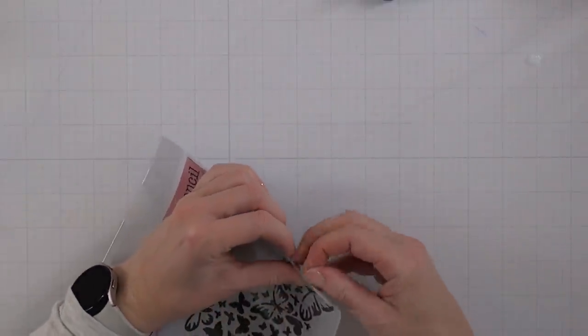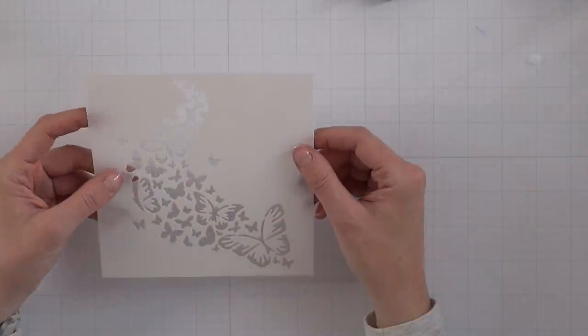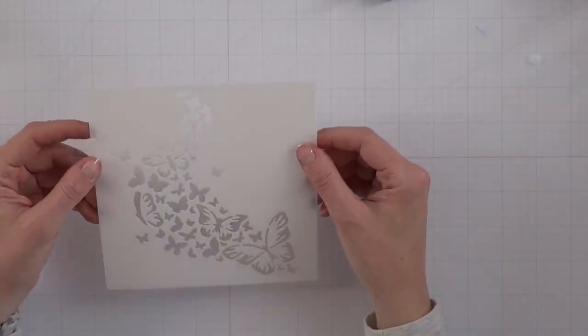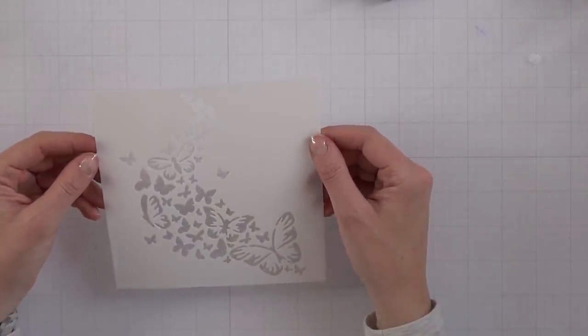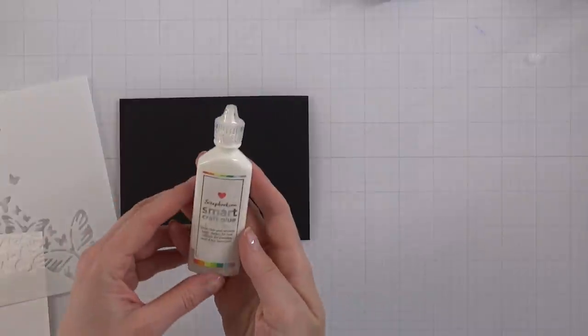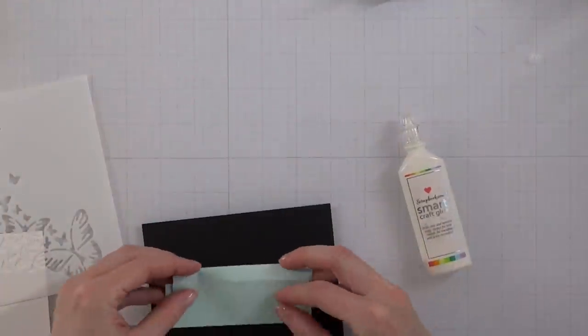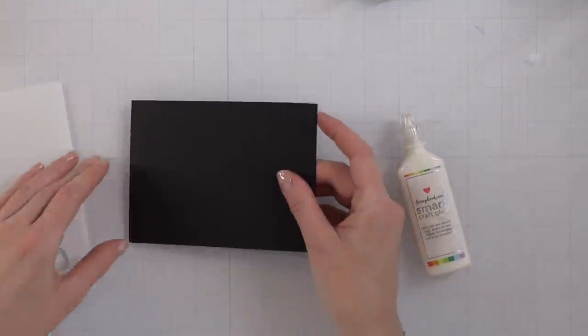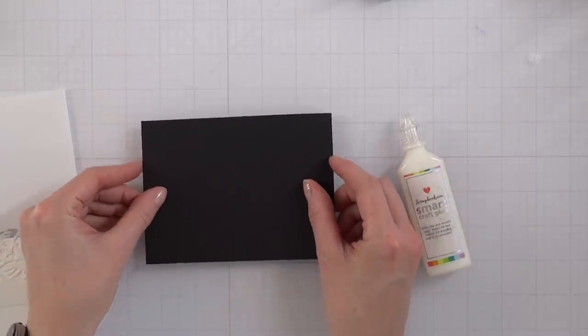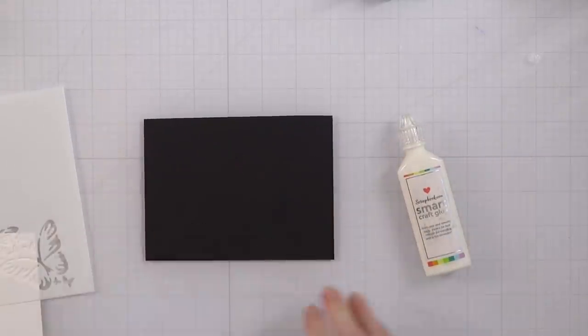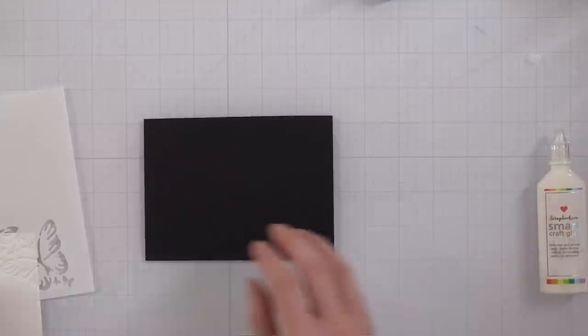This is called butterfly trails. This stencil actually comes in a 6x6 and a 12x12, so this would be really cool for scrapbooking layouts or other projects, maybe furniture or a home decor project. I'm going to do something a little bit unconventional. I don't know that I've ever seen anyone do this before.